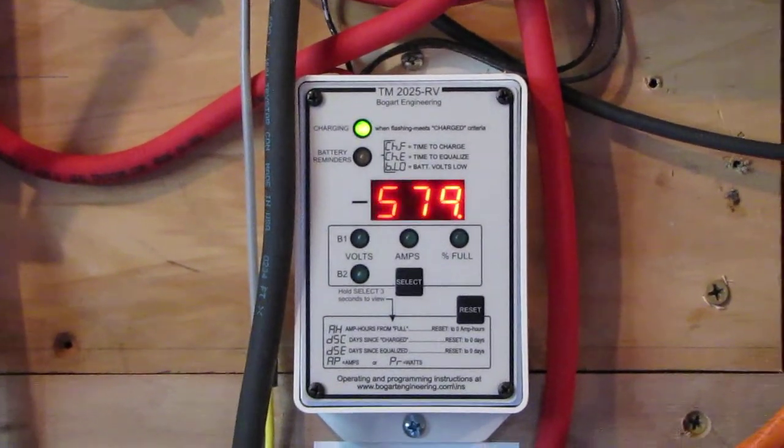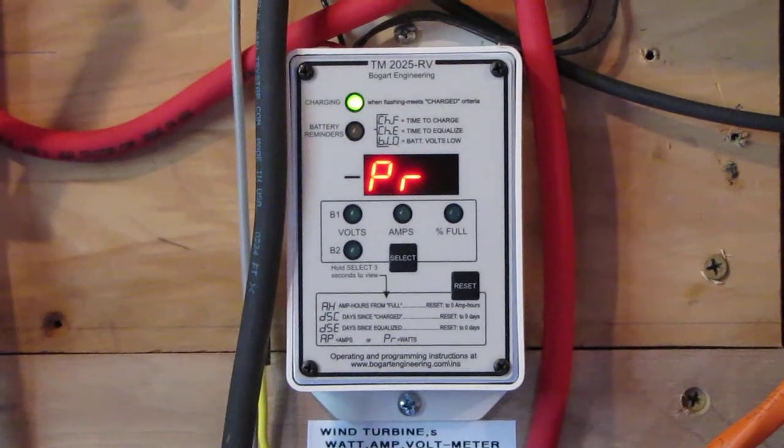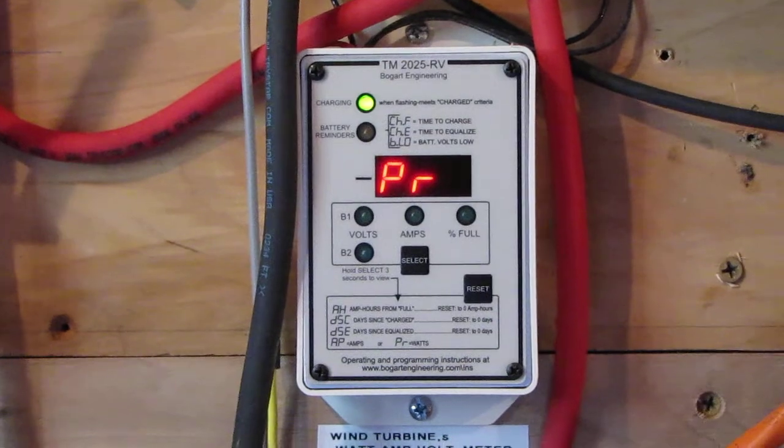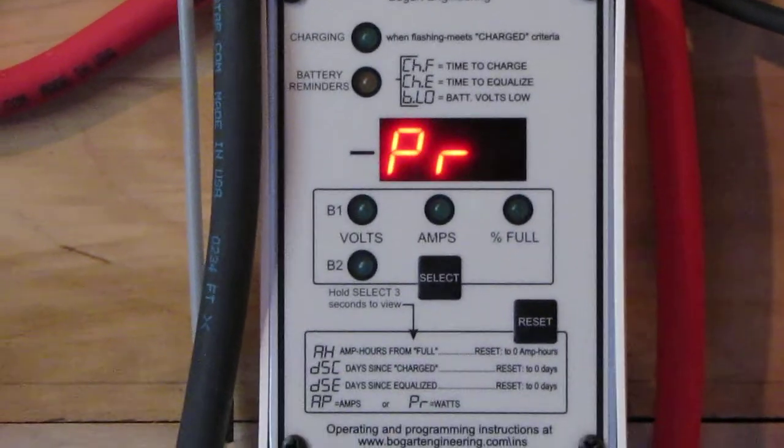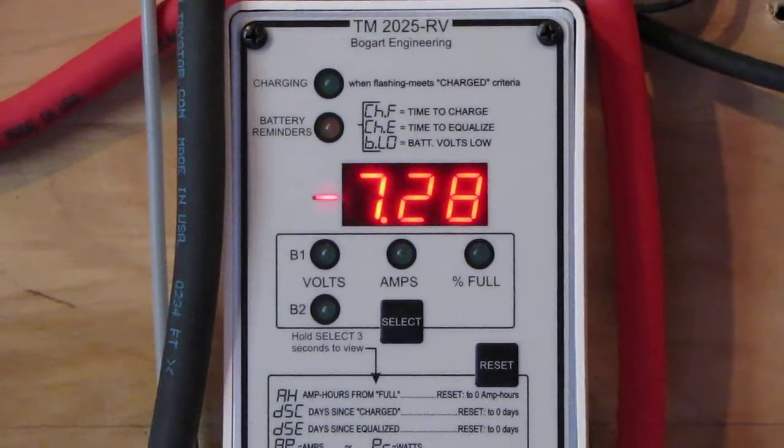That was a 12 mile an hour wind, so it makes a difference when you get a second wind turbine. You just saw 800 watts. All right, it's not making any power now, okay? But this Bogart Tri-metric is the bomb.